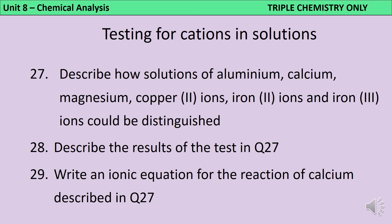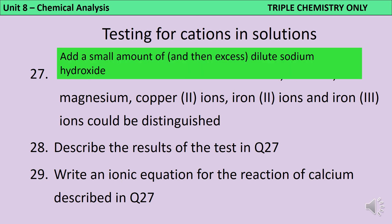These six cations can be distinguished by using a small amount and then an excess amount of sodium hydroxide. The first three — aluminium, calcium, and magnesium ions — will all produce a white precipitate when sodium hydroxide is added. However, when more sodium hydroxide is added until it's in excess, the aluminium precipitate will redissolve, whereas the other two will not. The copper 2+ ions will produce a blue precipitate, the iron 2+ ions will produce a green precipitate, and the iron 3+ ions will produce a brown precipitate.